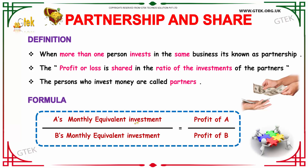The formula is: A's monthly equivalent investment divided by B's monthly equivalent investment is equal to profit of A divided by profit of B. So how much you invested, the same percentage you will be getting as profit. That's the formula.